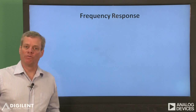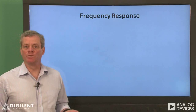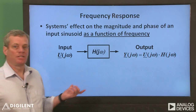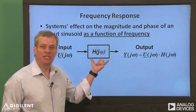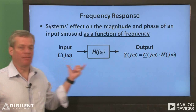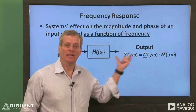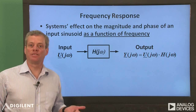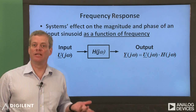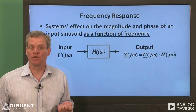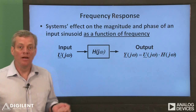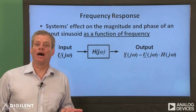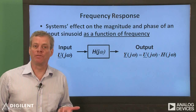First, let's do a really brief overview on what a frequency response is. A system's frequency response is simply the relationship between the input of the system and the output sinusoids. It characterizes the effect that the system has on an input sinusoid as a function of frequency. The frequency response, H of j-omega, is a complex function of frequency.